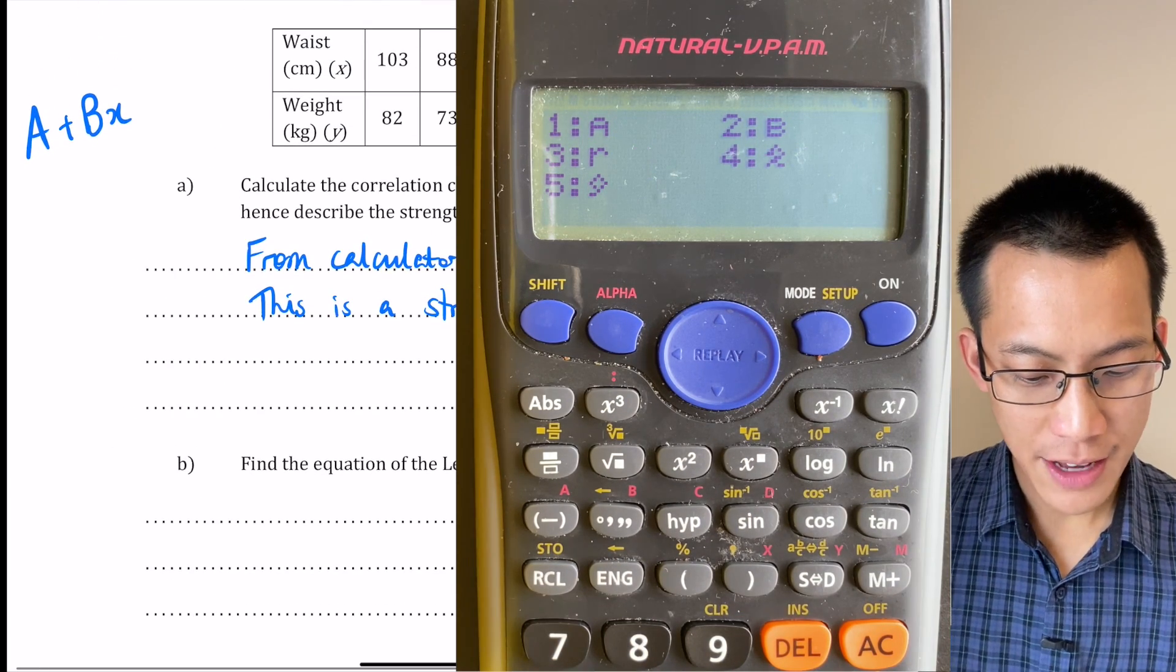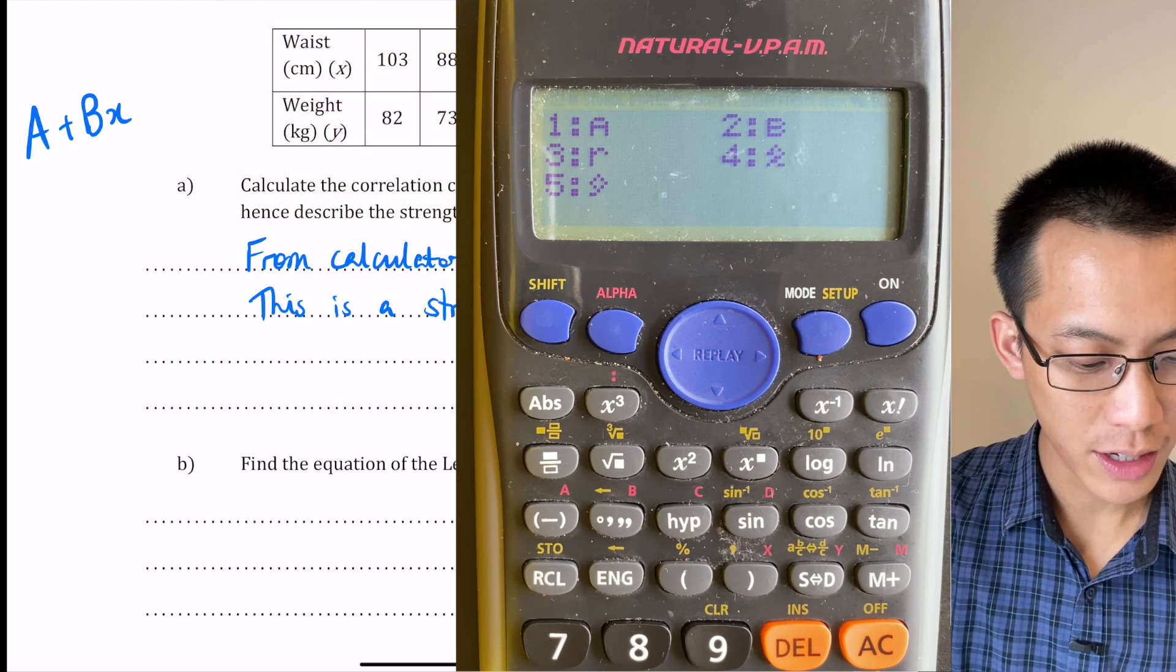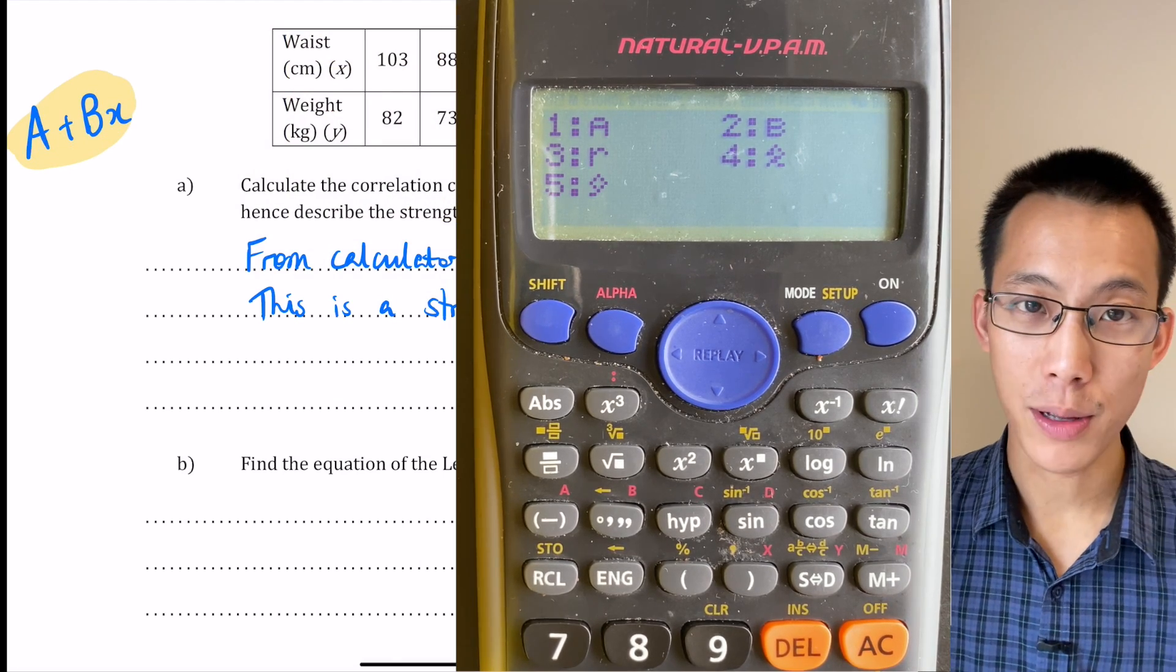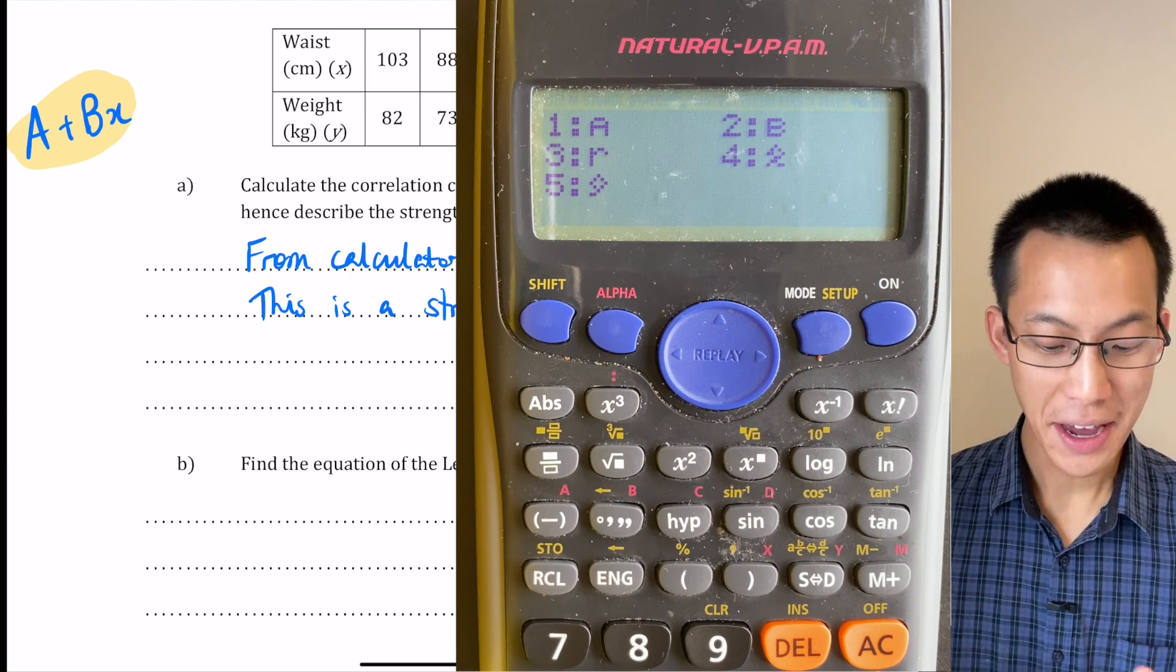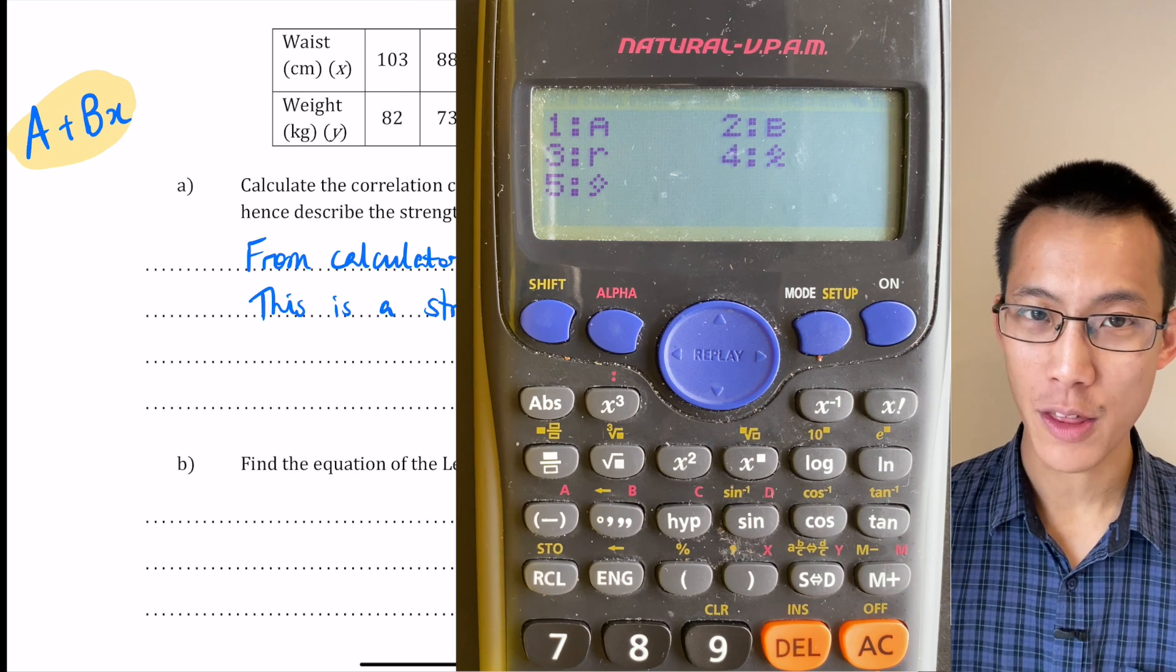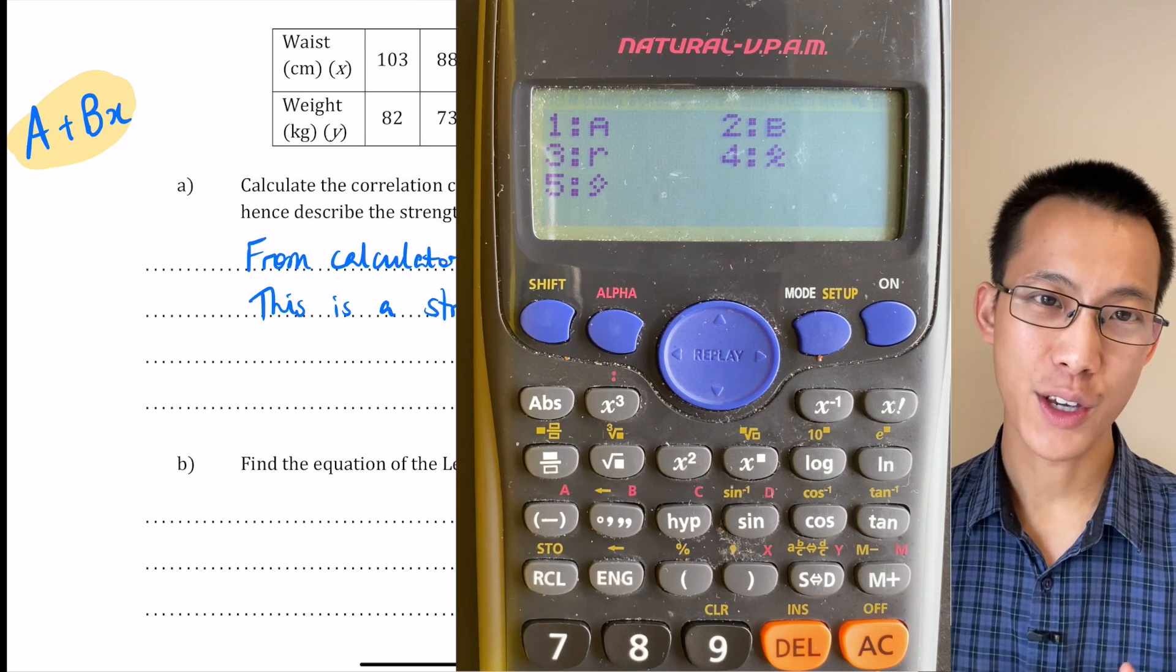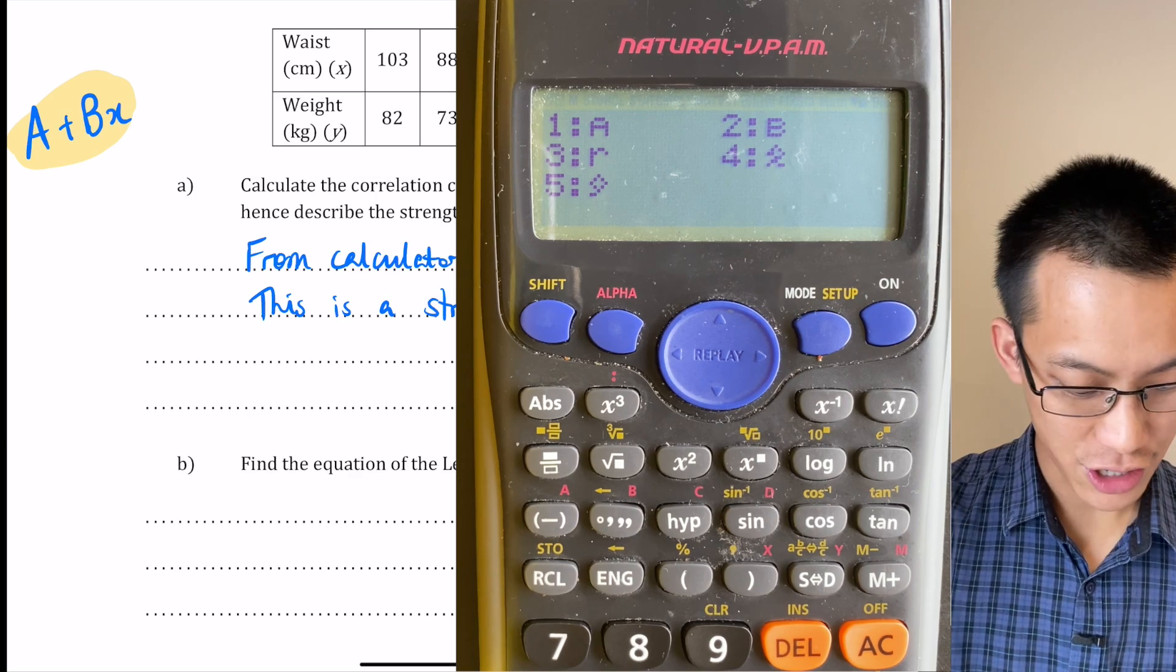And this is where I'm going to remind you that when we selected this statistical mode in the first place this mode was called A plus BX. Now that A plus BX refers to the equation of the least squares regression line. The A is going to be the y-intercept and the B is going to be the gradient. So let's work out what those two numbers are each in turn.